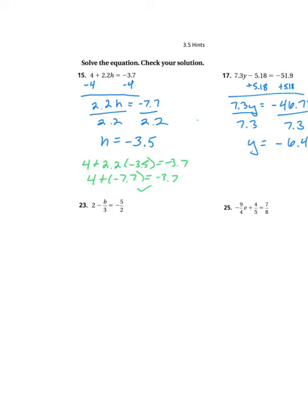Next we have an example with fractions. Usually those are a little bit easier. So I have two terms on the left. My 2 is positive, right? So what I need to do is subtract 2 from both sides. And what I'm left with is negative b over 3 is equal to negative 5 halves minus 2.